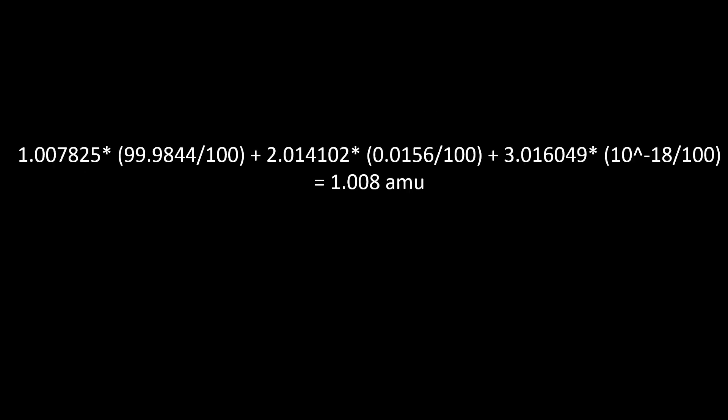For hydrogen, this translates to 1.007825 times 99.9844 divided by 100 plus 2.014102 times 0.0156 divided by 100 plus 3.016049 times 1 times 10 to the negative 18 divided by 100, which equals 1.008 or the relative atomic mass of hydrogen.